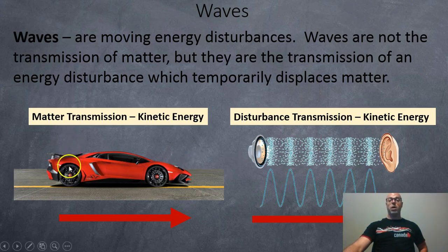So an example of matter transmission would be a moving car. It's got kinetic energy. So the molecules of the car go from one place to another. That's transmission of matter.